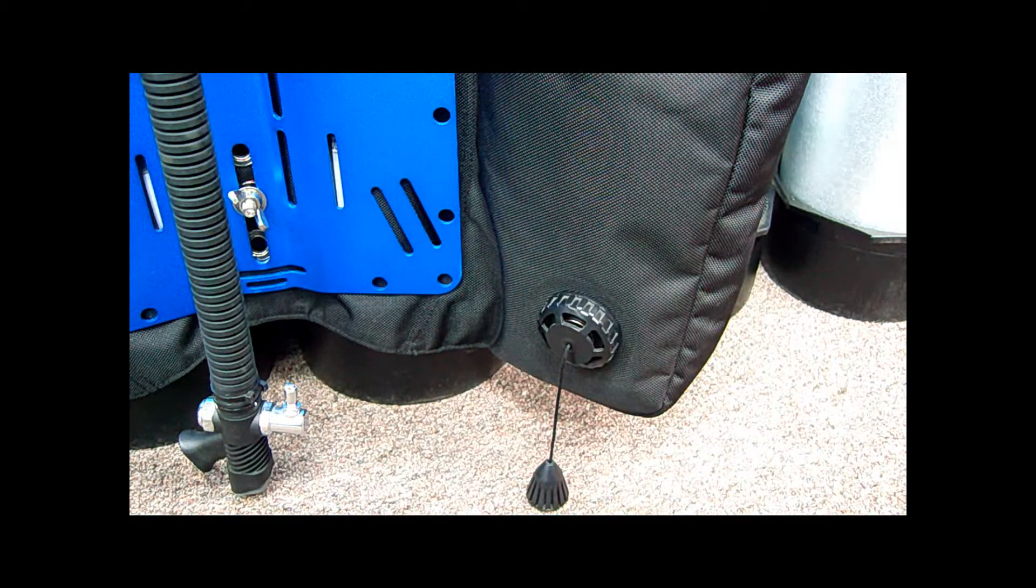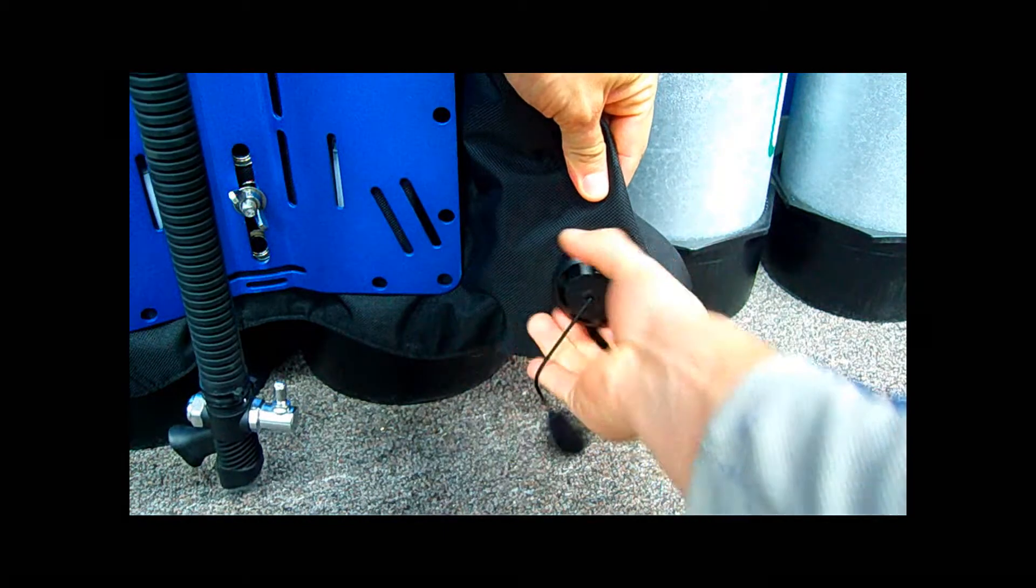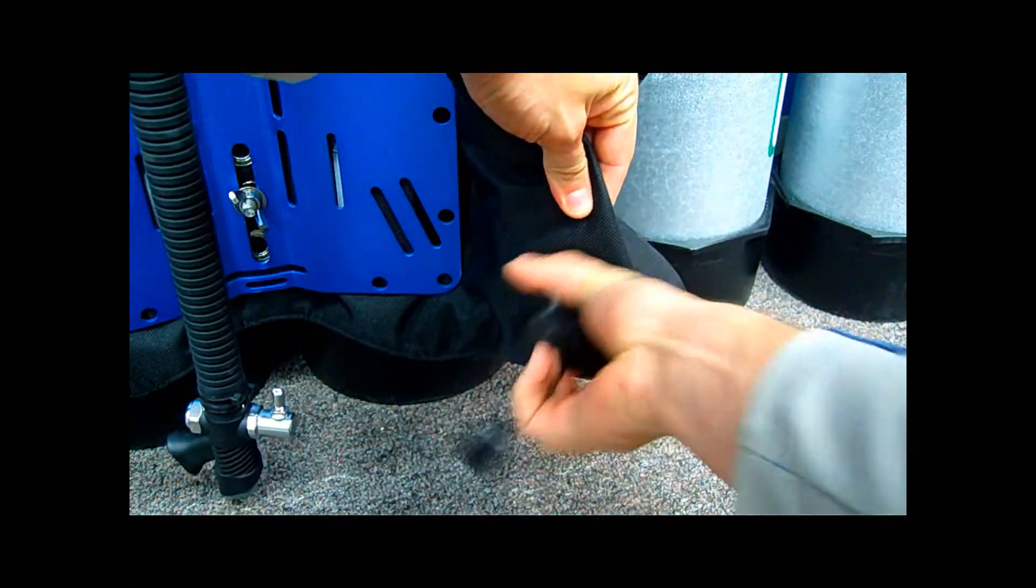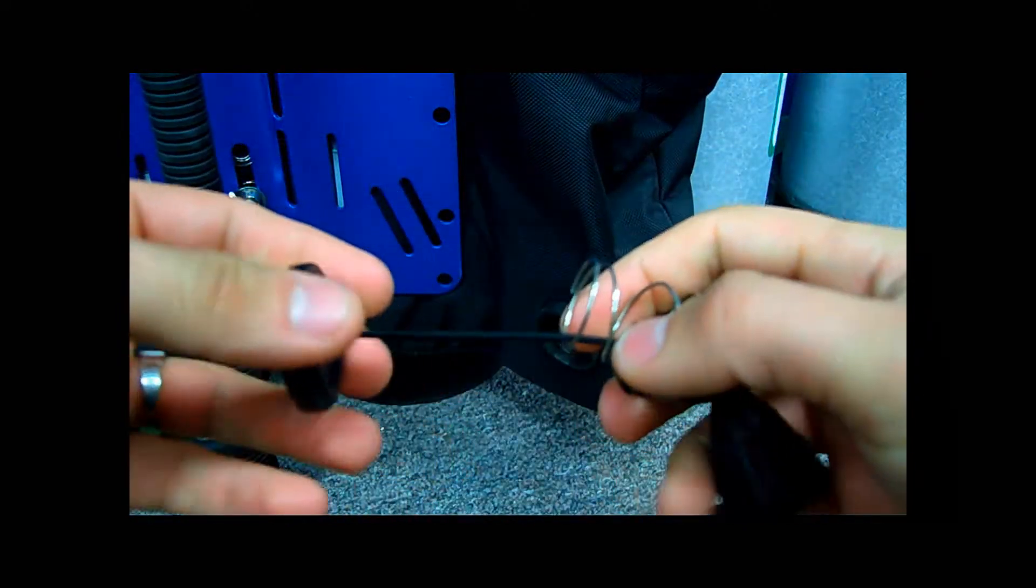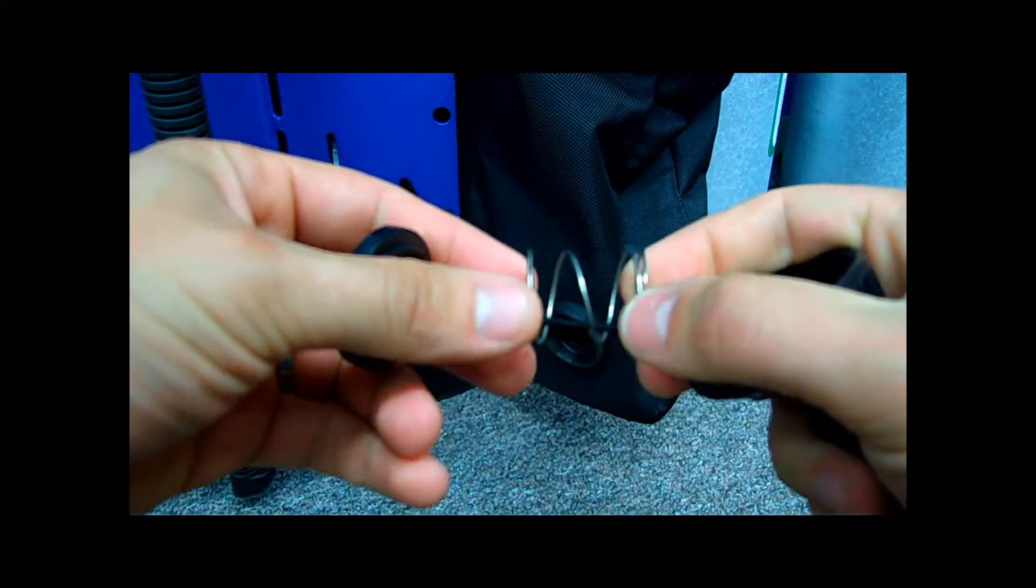Alright, if you wanted to inspect your hog wing yourself, all you need to do is take your wing, untwist the OPV, and you can see the spring.